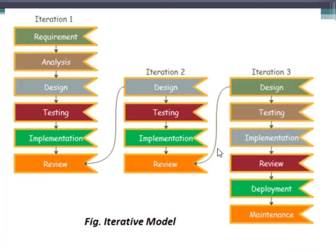In the iterative model, we have similar phases just as in the waterfall model. In the first phase, we follow the requirement analysis part where we gather all the requirements, judge those requirements, classify those requirements, and based on them we create a requirement document known as SRS (Software Requirements Specification). Based on this SRS, we perform analysis of how requirements should be accepted and worked upon. Based on the analyzed requirements, we prepare a design.